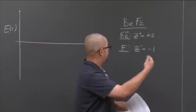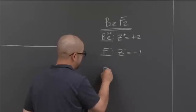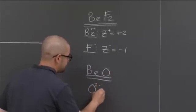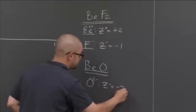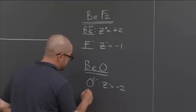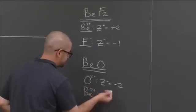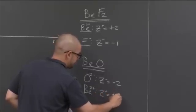I want to do the same thing for BeF2 and for BeO. I have the oxygen 2 minus, so my anion has a Z minus of minus 2, and my cation has a Z plus of plus 2.